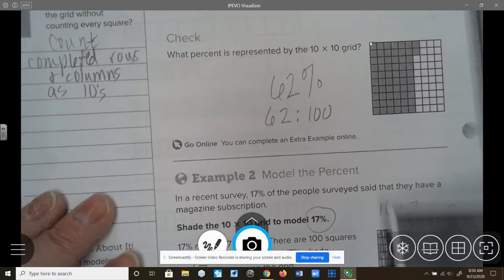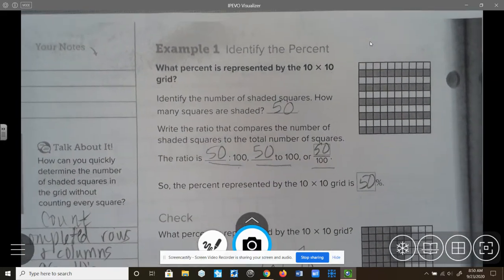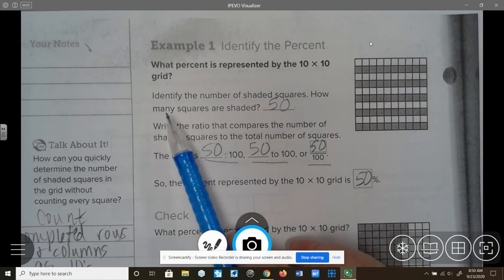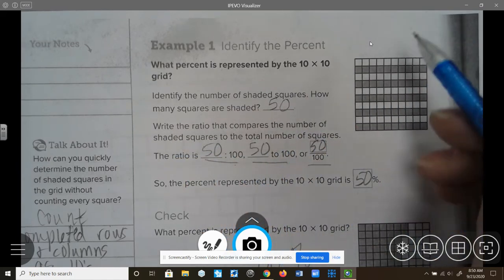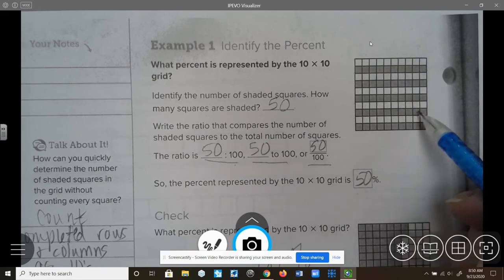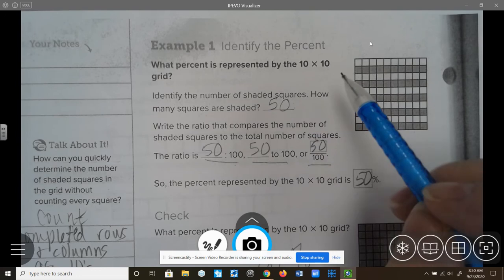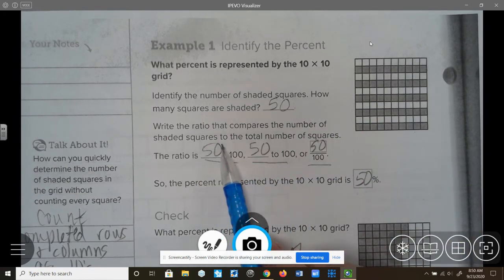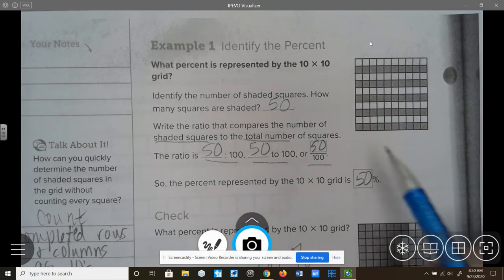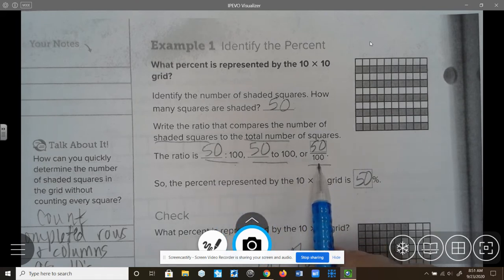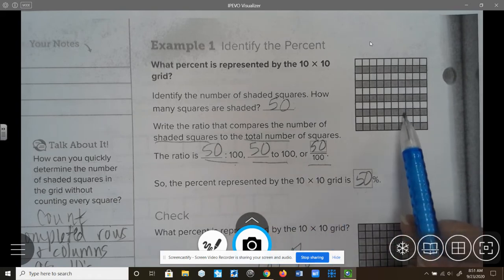Continuing on to page 80, at the very top of 80, it says example 1, identify the percent. What percent is represented by the 10 by 10 grid? So if I'm taking a look at this, I'm going to identify the number of shaded squares. So I have 10, 20, 30, 40, 50, because remember each row is 10 squares. So if all the squares are shaded, that means there are 10 in each row that are shaded. So that means there are 50 shaded squares. So write the ratio that compares the number of shaded squares to the total. So we're doing shaded squares to total, so it's a part to whole ratio. The ratio is 50 to 100, 50 to 100, or 50 over 100. So the percent represented in this grid would be 50%.